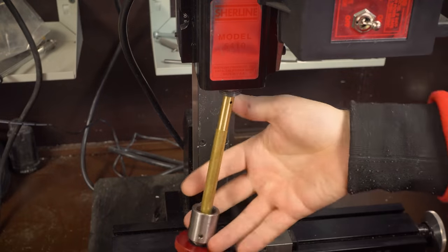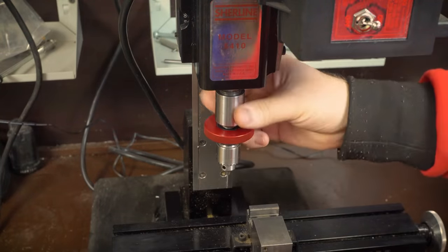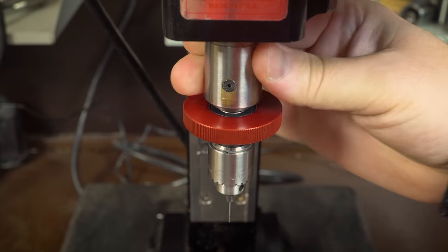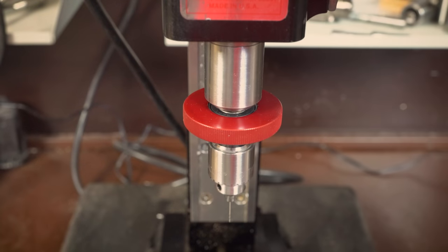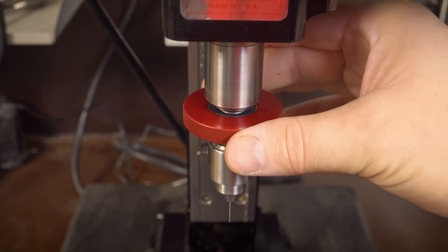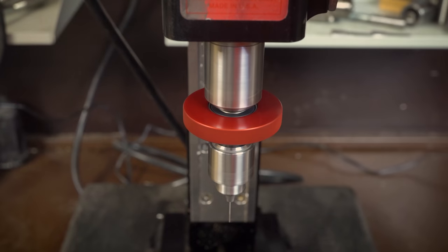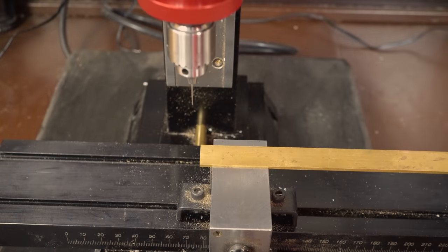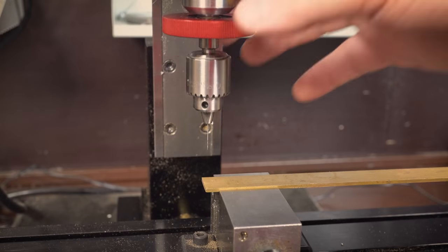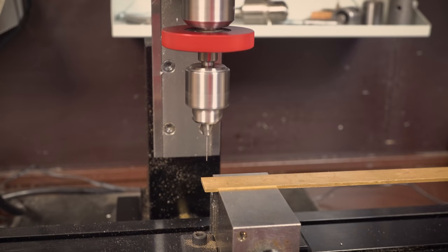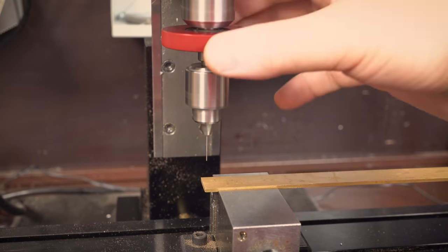We insert it all into the spindle of our milling machine and tighten it. Immediately you can see that the bounce is minimal. This ring is for manual control. We will use this two millimeter brass strip to test it. Usually the thinner the drill the more revolutions you need so we will put it on max.